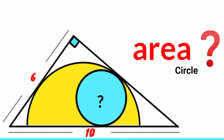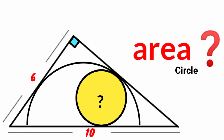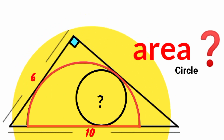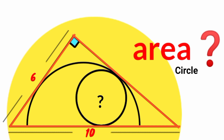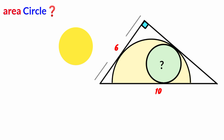Hi everyone, welcome back to another interesting question. We are asked to calculate the area of the circle. From the figure, we observe a semicircle and a triangle which has sides of length 6 units and 10 units, and we have a right angle here.